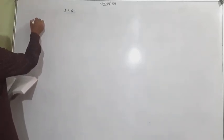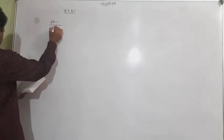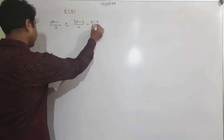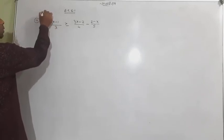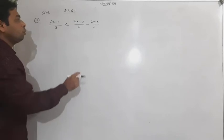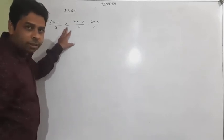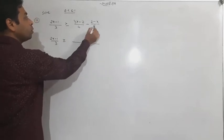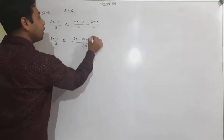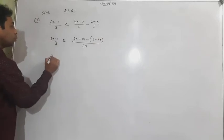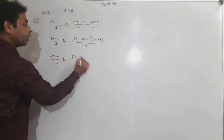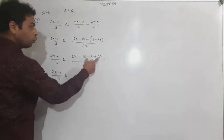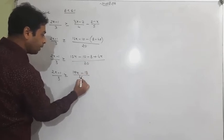Let me pick question 16: (2x − 1)/3 ≥ (3x − 2)/4 − (2 − x)/5. You solve it just as you would with an equal sign — it is only an inequality sign. Take the LCM of 4 and 5, which is 20. Multiply accordingly: 5×(3x−2) gives 15x−10, and 4×(2−x) gives 8−4x. So the right side becomes (15x − 10 − 8 + 4x)/20 = (19x − 18)/20.